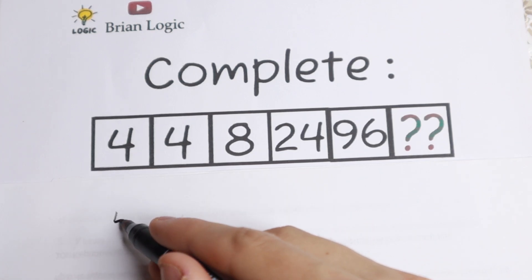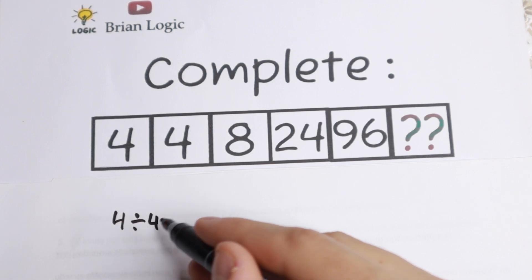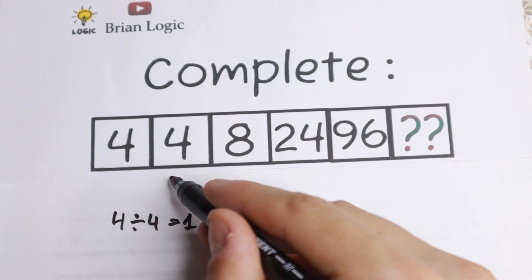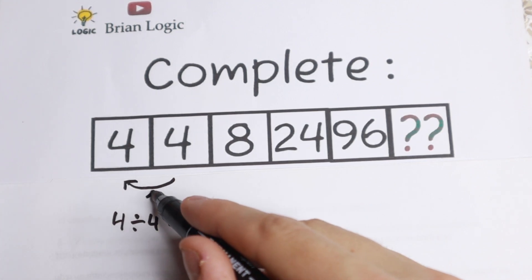So if we divide four by four, we will have one. So we divide the second number by the first one, we will have one.